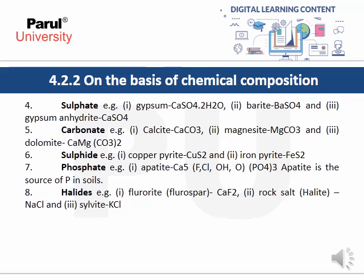The fourth group is sulfates — examples are gypsum (CaSO4·2H2O) and anhydrite (CaSO4, with no water molecule). Fifth is carbonates — calcite, magnesite, and dolomite, representing calcium carbonate, magnesium carbonate, and calcium-magnesium carbonate. Sixth is sulfides — copper pyrite and iron pyrite. Seventh is phosphates — apatite, which is the source of phosphorus in soil. Eighth is halides — fluorite (calcium fluoride), rock salt (sodium chloride), and sylvite (potassium chloride).